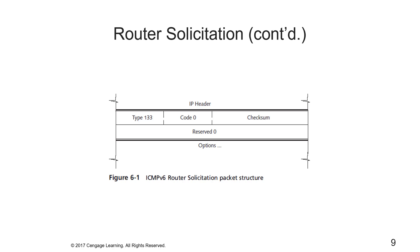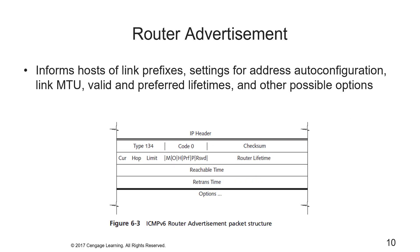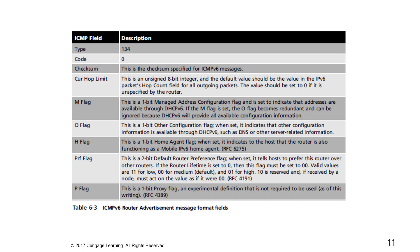For router advertisements, routers periodically send router advertisement messages to let hosts know of link prefixes, whether address auto-configuration is enabled, link MTU, valid and preferred lifetimes, and other options. Routers also reply to router solicitation messages using router advertisement messages. Figure 6-3 shows the router advertisement packet structure, and Table 6-3 lists the various format fields including reserved, router lifetime, and others.